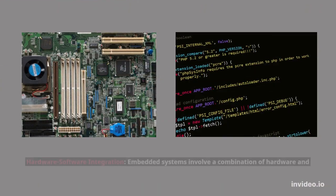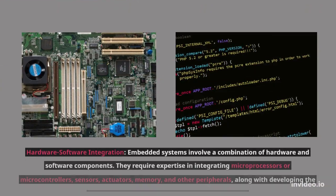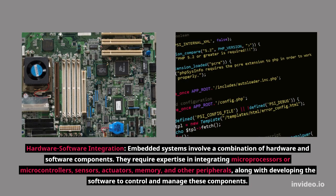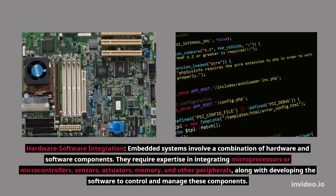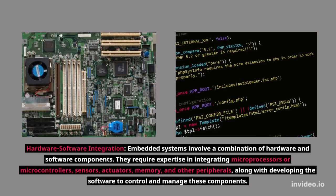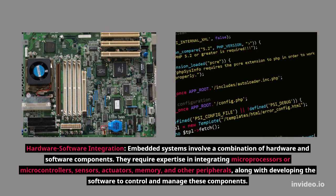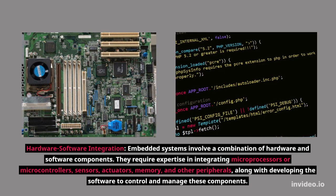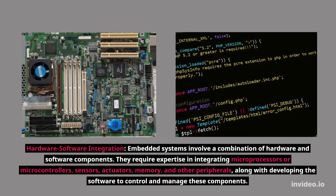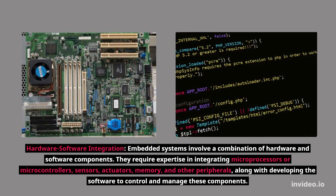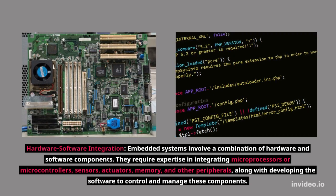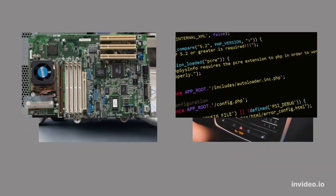Hardware-Software Integration: Embedded systems involve a combination of hardware and software components. They require expertise in integrating microprocessors or microcontrollers, sensors, actuators, memory, and other peripherals, along with developing the software to control and manage these components.